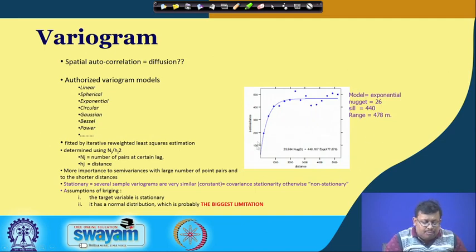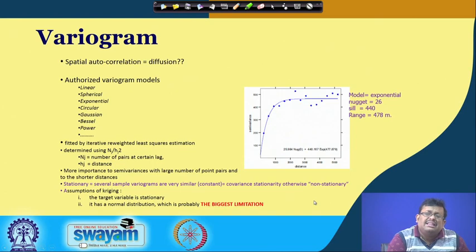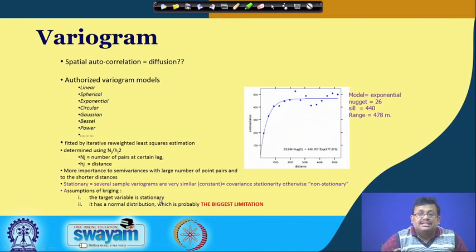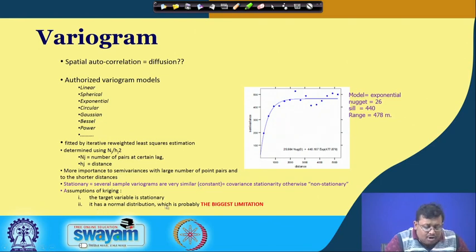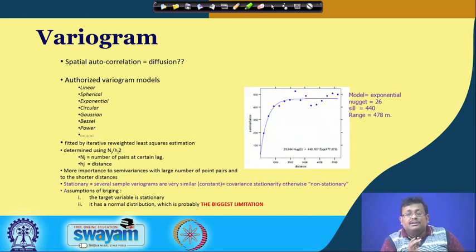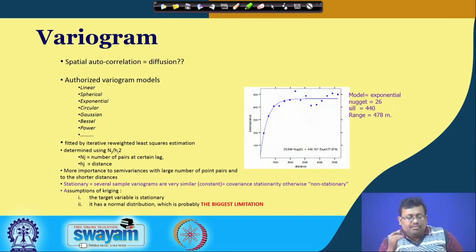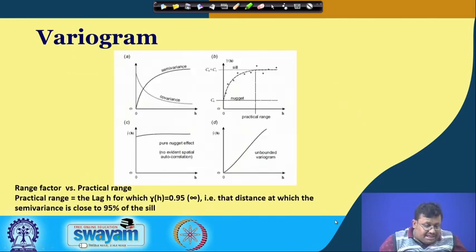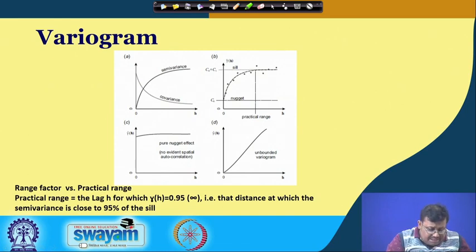This is an exponential model of semi-variogram fitted through least-squares estimation. The assumptions of Kriging state that the target variable is stationary — for example, pH is a stationary variable — and it has a normal distribution, which is probably the biggest limitation. If data is not normally distributed, we must apply transformations such as logarithmic transformation to make it normal before using it for Kriging interpolation.